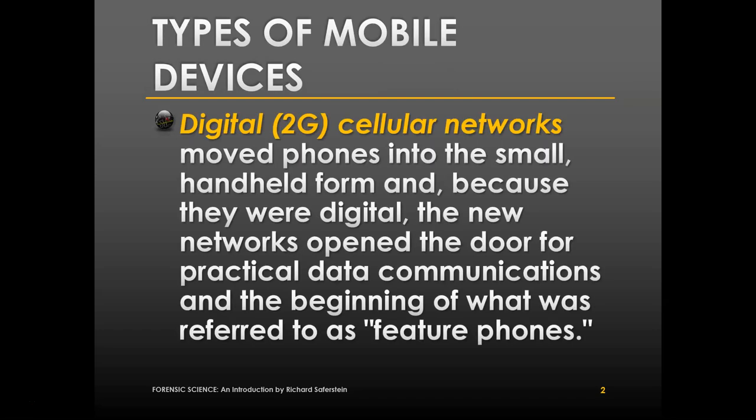There are a lot of different types of mobile devices. Previously, 2G was the main cellular network, and this is what caused phones to be small handheld devices. Because they were digital, the new networks opened the door for practical data communications. The beginning was referred to as feature phones — where phones that could access the internet first began.